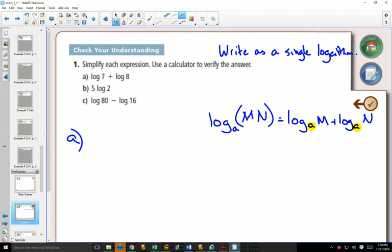So in this case we're adding, so we can write this together as log of 7 times 8, which is log of 56. And this would be simplified. If you had to estimate this, what would you estimate this as?